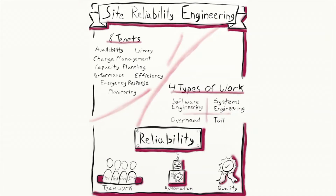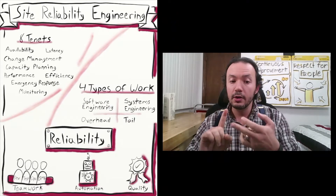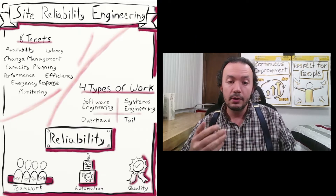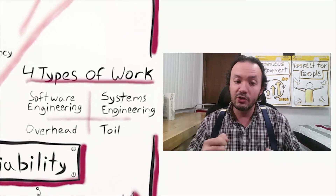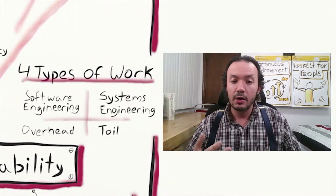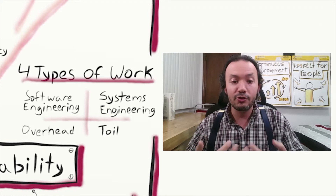Now, Site Reliability Engineering is what happens when you treat infrastructure like a software problem. Another way of thinking about this is that SRE is what happens when you ask software engineers to design an operations team. In SRE, there are four types of work: software engineering, system engineering, overhead, and toil. The first two — software engineering and system engineering — are where we want people to be spending most of their focus.